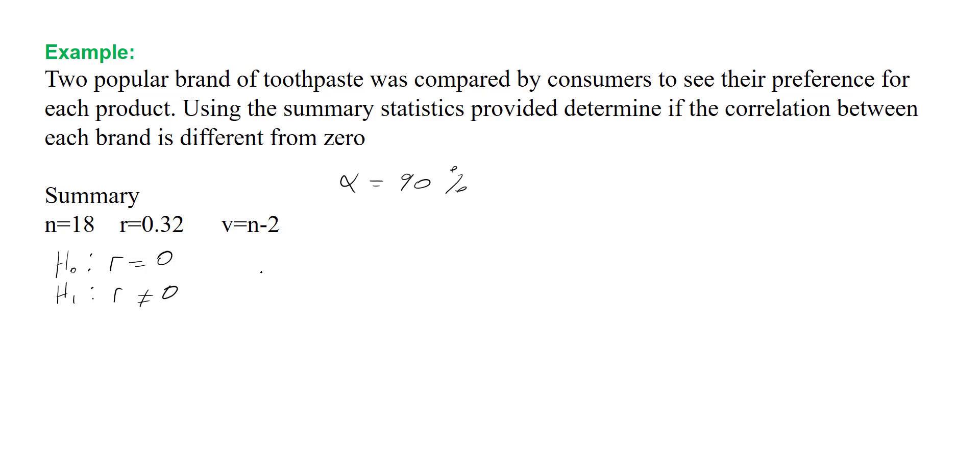We'll note our rejection region first. Our rejection region would be: we reject our null hypothesis given that T, which is the test statistic, is greater than t(n-2, alpha/2), which is our critical value. Given that this is a two-tailed test, we'll make this into a three-way inequality.